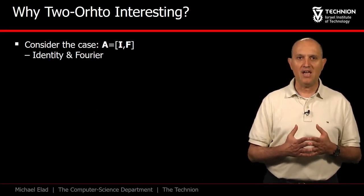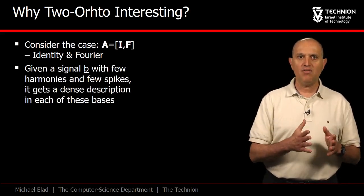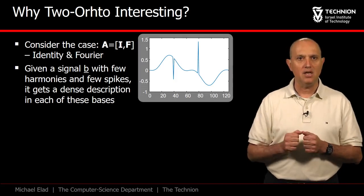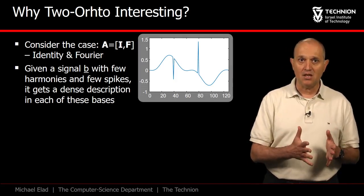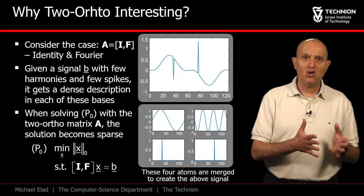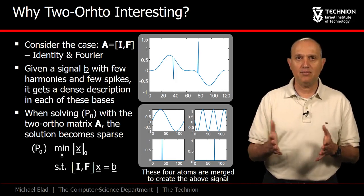What is so appealing about the two-ortho? Well, consider the case in which A is built of the identity and the Fourier matrices. If we are given a signal b that is built of few harmonics and few spikes, its description will be dense in either of these two bases. However, when posed as a linear combination of the columns of A, such a signal could be described sparsely.